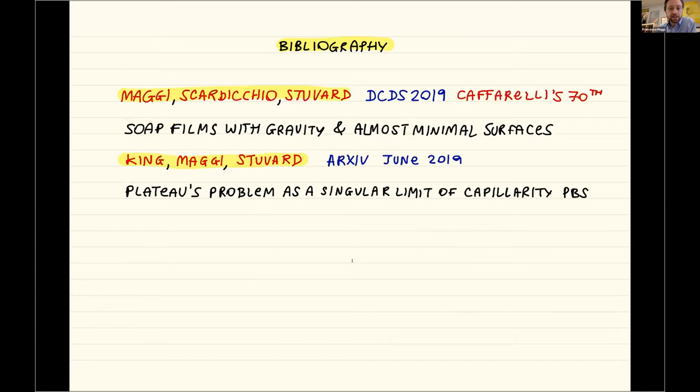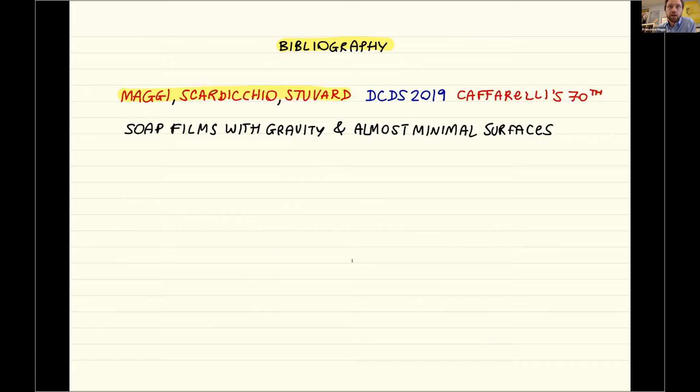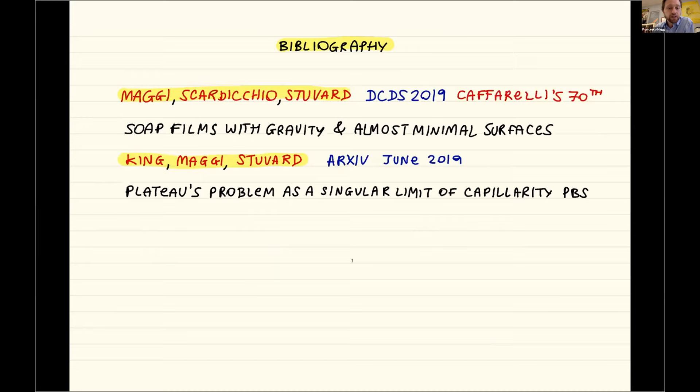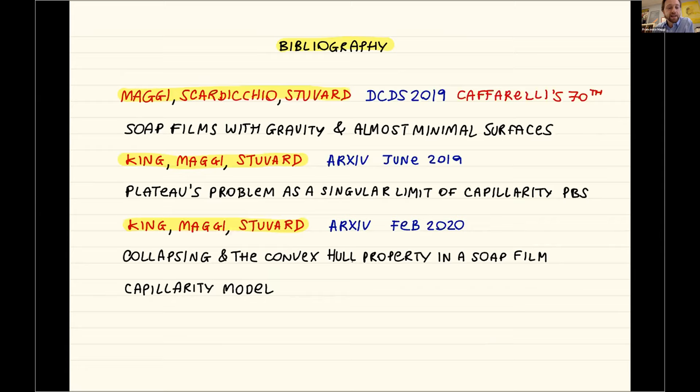The first paper with Scardicchio and Stuvard appeared in Discrete and Continuous Dynamical Systems in 2019, written for Luis Caffarelli's 70th birthday, introducing the model and studying minimal sequences of surfaces with mean curvature going to zero. The second paper with King and Stuvard contains the existence, basic regularity theorems, and convergence to the Plateau problem. A more recent preprint discusses the collapsing and convex hull properties. Thank you.